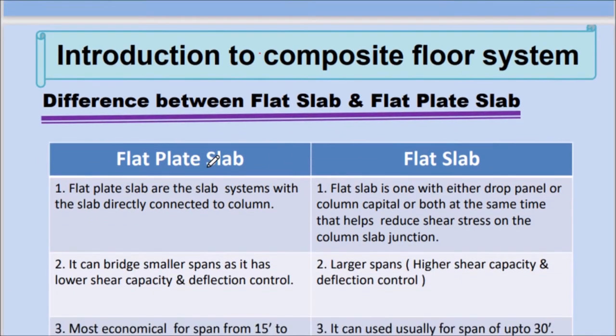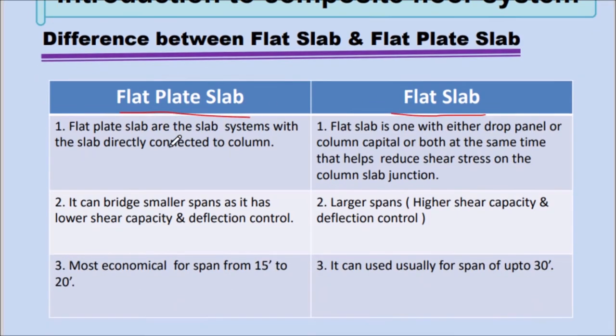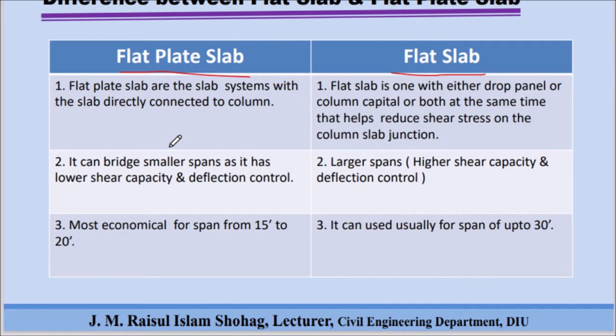Flat plate slab are slab systems with the slab directly connected to the column. Flat slab is one with either drop panel or column capital, or both at the same time, that helps reduce shear stress on the column slab junction. Flat plate slab can bridge smaller spans as it has lower shear capacity and deflection control. It is most economical for spans from 15 to 20 feet.